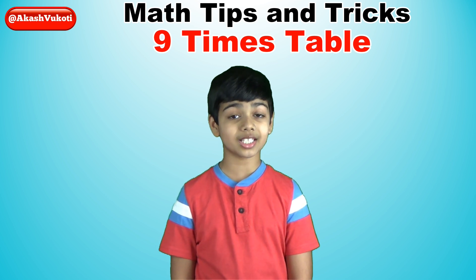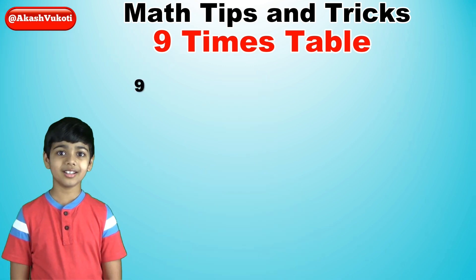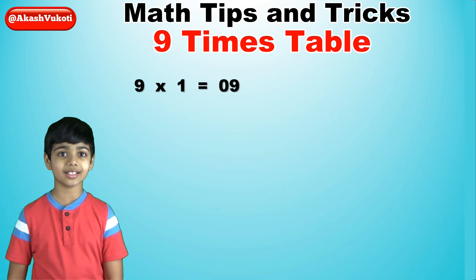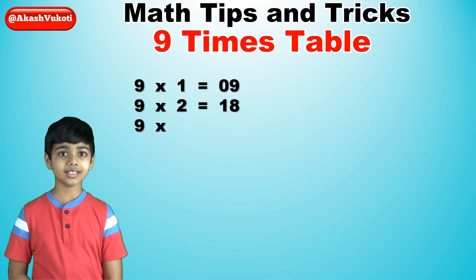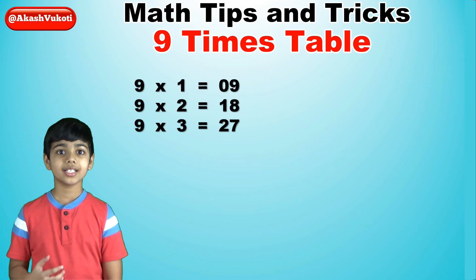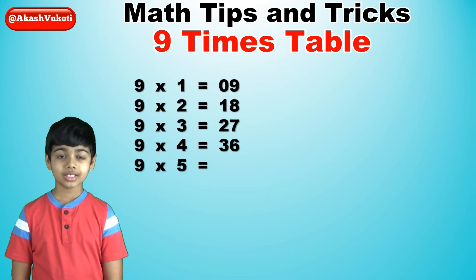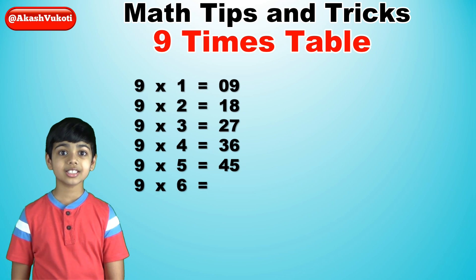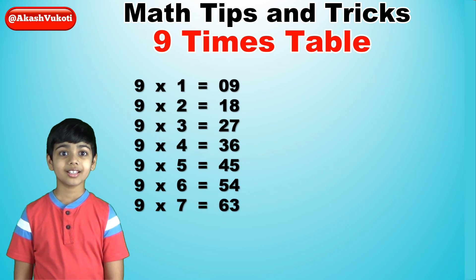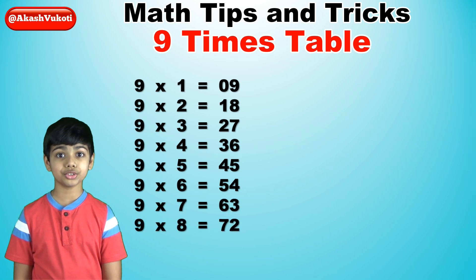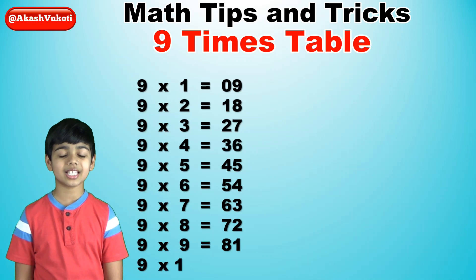Now let's recite the 9 times table. If you already know it, say it with me. 9 times 1 is 9. 9 times 2 is 18. 9 times 3 is 27. 9 times 4 is 36. 9 times 5 is 45. 9 times 6 is 54. 9 times 7 is 63. 9 times 8 is 72. 9 times 9 is 81. And finally, 9 times 10 is 90.